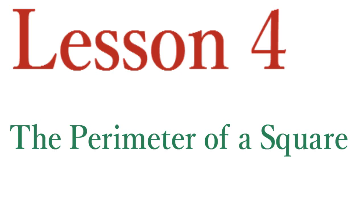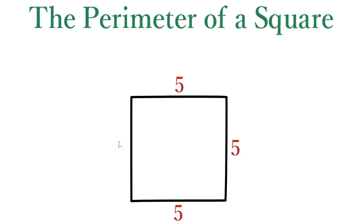In a previous lesson, you discovered how to measure the area of a square. Another important property of a square is its perimeter. The perimeter of a square is the complete distance around it.